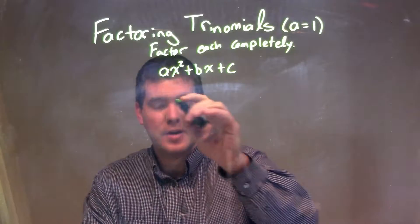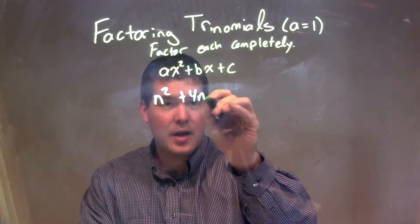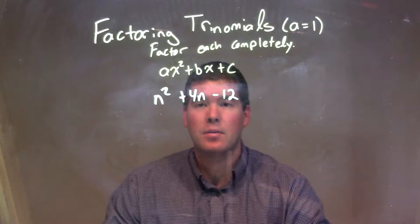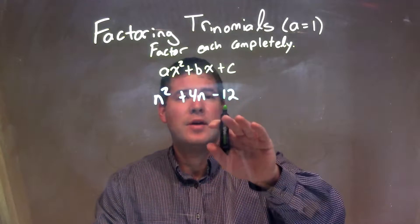So if I was given this trinomial, n² + 4n - 12, well, what I want to do here is look at this and say...